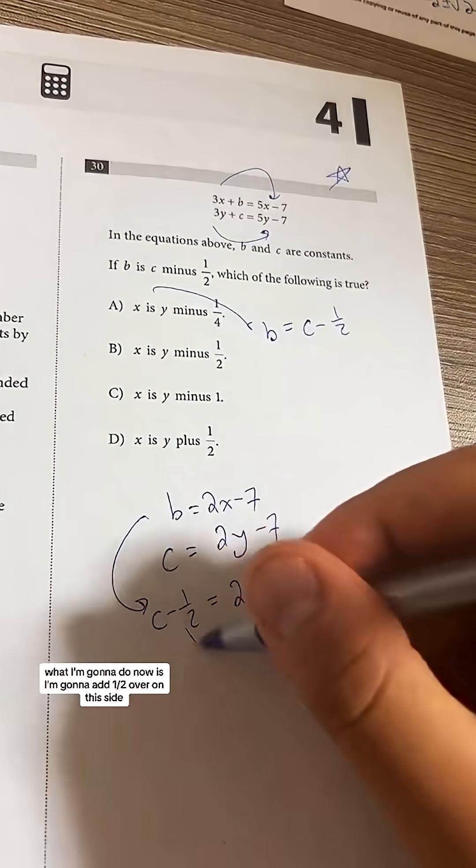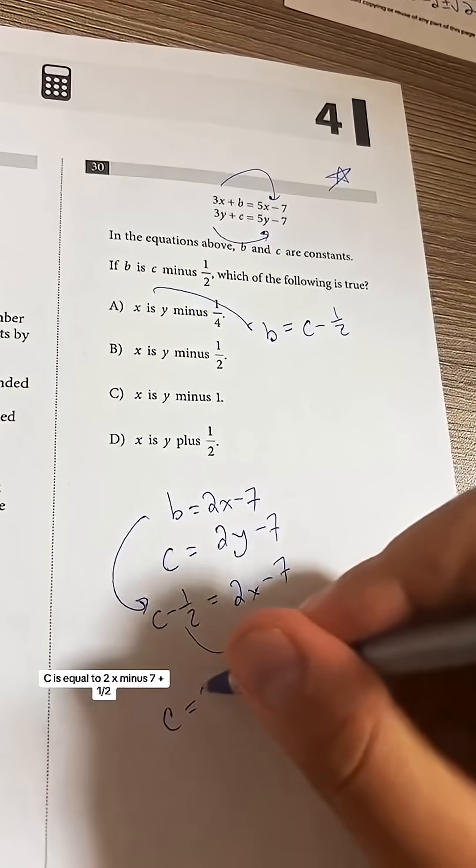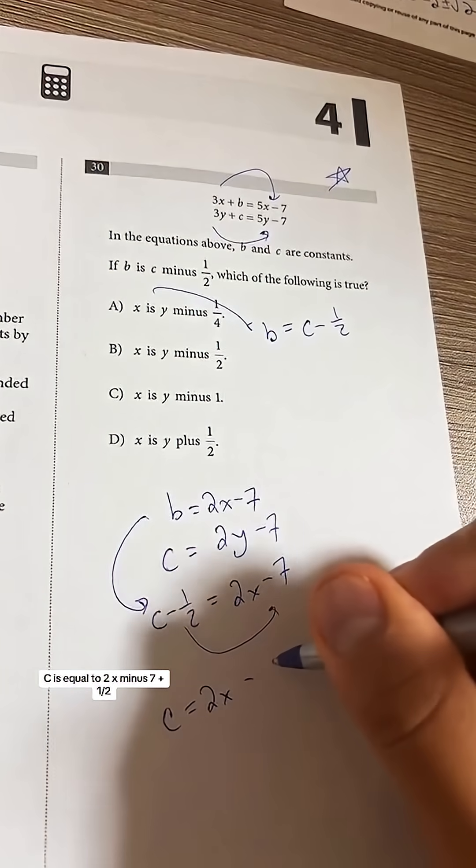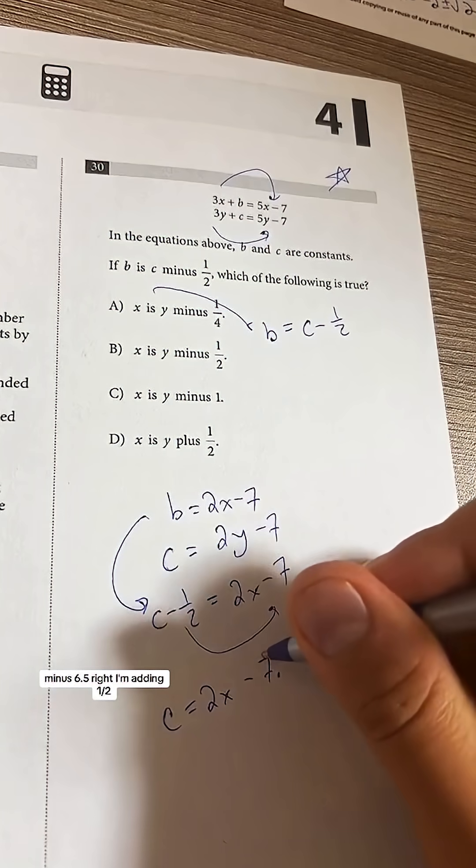What I'm going to do now is I'm going to add one half over on this side. c is equal to 2x minus 6.5, right? I'm adding one half. What am I going to do now?